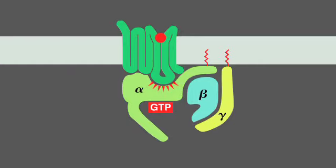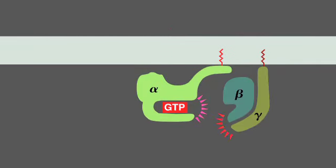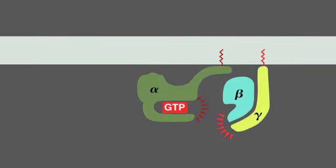GTP binding causes a further conformational change in the G-protein, activating both the alpha subunit and beta-gamma complex. The activated alpha subunit dissociates from the activated beta-gamma complex.